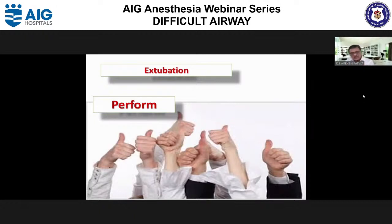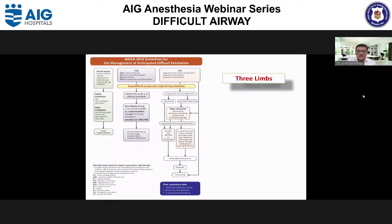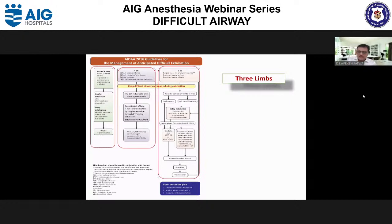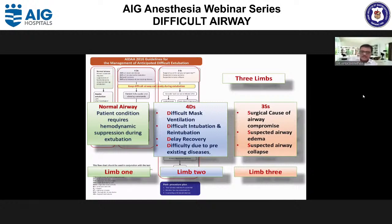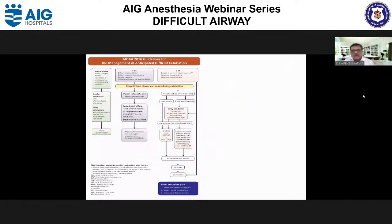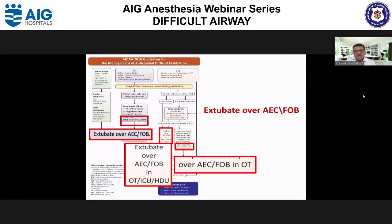When performing the extubation, always discuss the plan and its consequences with the surgical team. In 2016, the All India Difficult Airway Association gave an excellent systematic approach for anatomically challenging extubations. The algorithm has three limbs: the first for normal airway, the second for patients with any one of the 4Ds, and the third for patients with any of the 3Ss. All 4D and 3S extubations should be done over the AEC, though the approach strategy differs in each scenario.